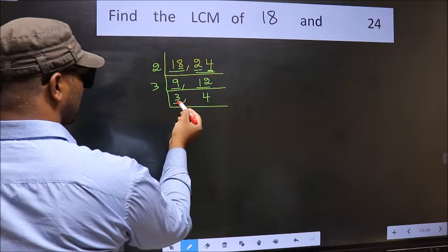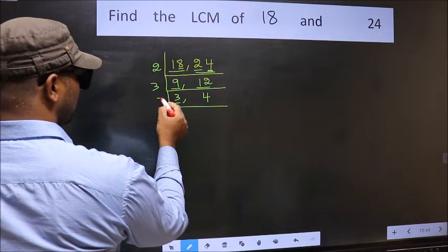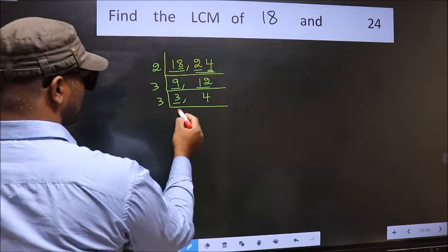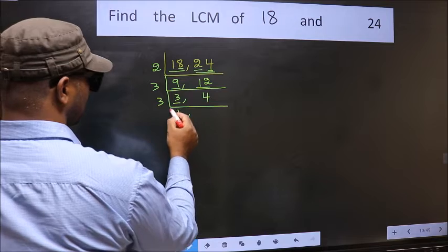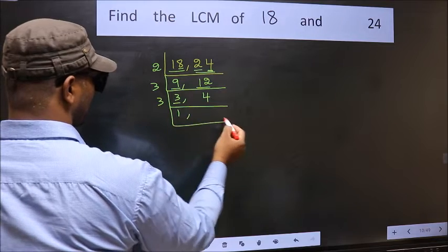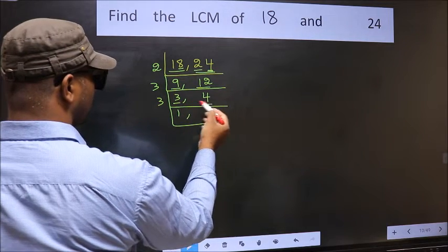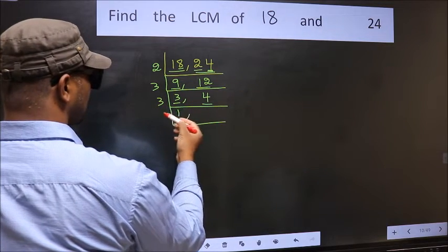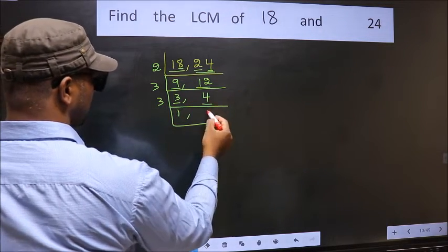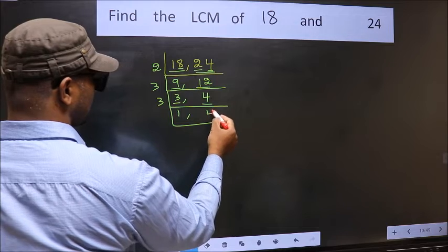Now here we have 3. 3 is a prime number, so 3 times 1 is 3. The other number is 4. 4 is not divisible by 3, so we write it down as it is.